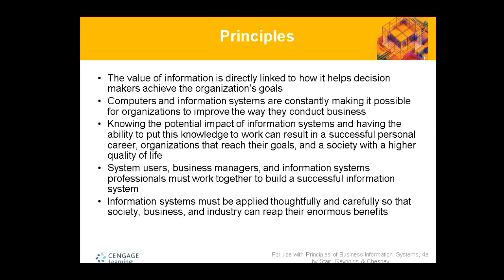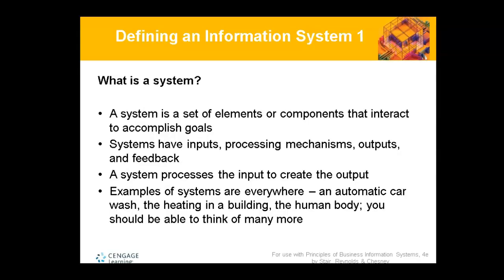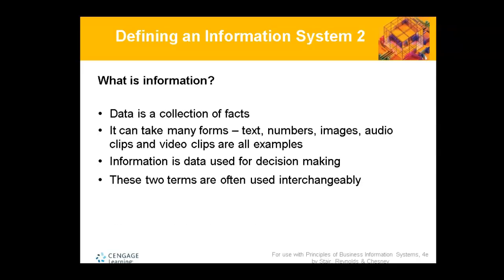The principles of business information are that it helps you and must be applied across the board. Defining an information system is straightforward — it's a set of elements that interact with each other to accomplish goals. For example, you have a computer and a mouse; both work together. When these different components in computing come together, you can work towards a specific goal, like making money in a business by combining a computer, mouse, and printer.